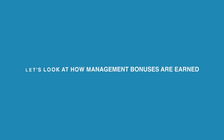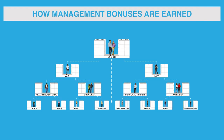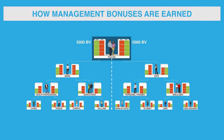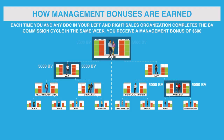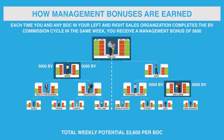Now, let's look at how management bonuses are earned. In addition to searching for BV and IBV, the system also searches your organization for business development centers that have completed the BV commission cycle. Every time you and any business development center in your left organization, like Mark, plus any business development center in your right organization, like Ann and Ben, complete the BV commission cycle in the same week, you receive a management bonus of $600. You have the potential to earn $3,600 per week per business development center, or $187,000 per year.